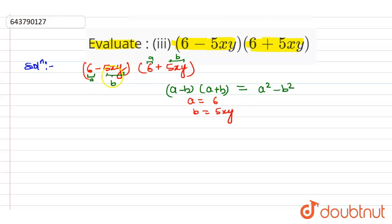When it is in the form of a minus b into a plus b, we can write a square minus b square. So a is 6, then 6 square minus b is 5xy, so 5xy square.